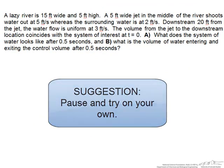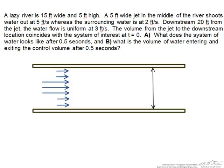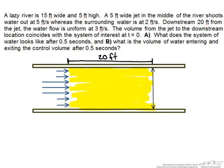The best place to start is with a diagram. From the jet to the downstream location is the control volume of interest, which I have labeled here as yellow. We know that this width is 5 feet, which means these two widths are also 5 feet.